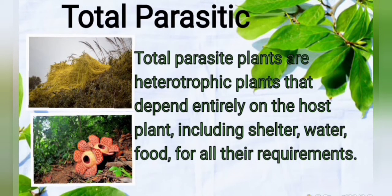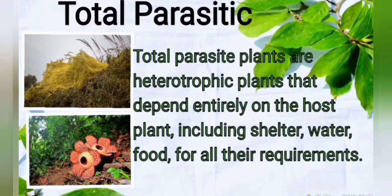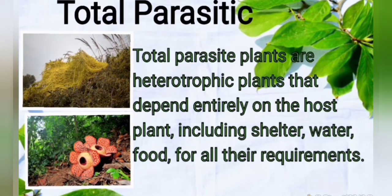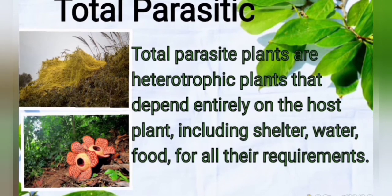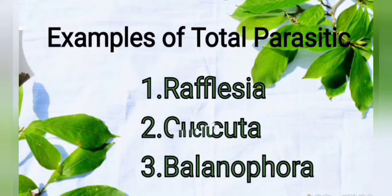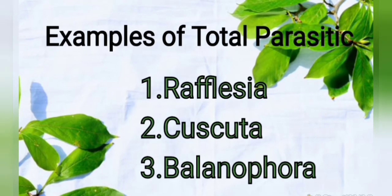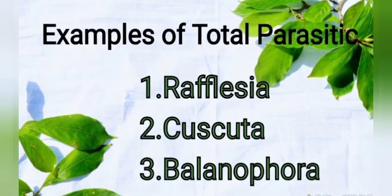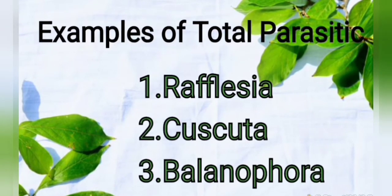The total parasitic plant is a plant that depends entirely on the host plant, including shelter, water, food, and all their requirements. Examples of total parasitic plants are Rafflesia, Cuscuta, and Balanophora — these are the plants that depend on host plants.